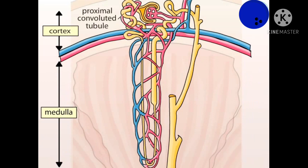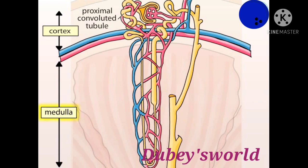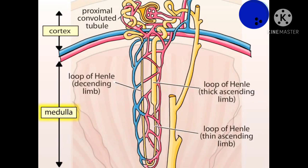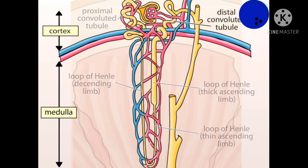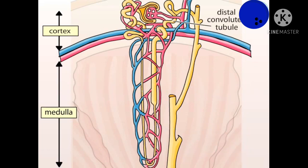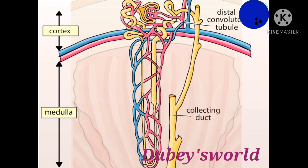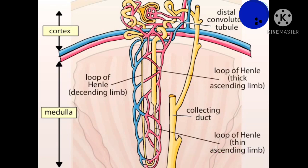From the proximal convoluted tubule, the nephron tubule turns down into the medulla. The portion of the tubule in the medulla is called the loop of Henle. Where the ascending limb of the loop of Henle reaches the cortex, it becomes the distal convoluted tubule. The distal convoluted tubules of many nephrons join a common collecting duct in the cortex. The collecting ducts then run in parallel with the loops of Henle down through the medulla and empty into the ureter at the tips of the renal pyramids.